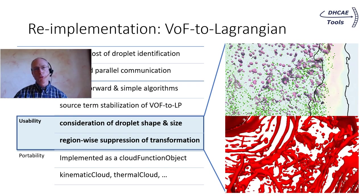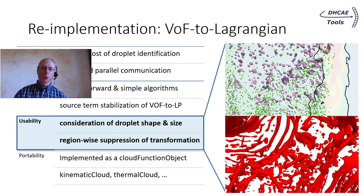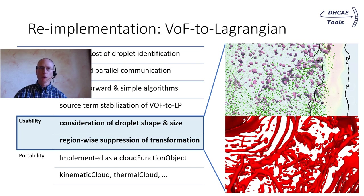To be useful, the user must be able to select the size and shape of the droplets that should be transformed. For example, very large droplets should be tracked further with the VoF method and ISO-advector, while smaller droplets might be transformed as soon as possible. Furthermore, the user should be able to exclude specific regions from the VoF-to-Lagrangian function — for example, to have ligaments and droplets reach the jets for further atomization, or to wait for colliding sprays until the complex interaction is handled by VoF and ISO-advector completely.